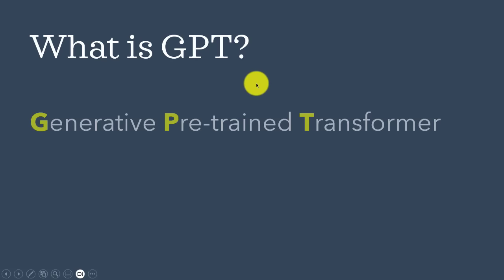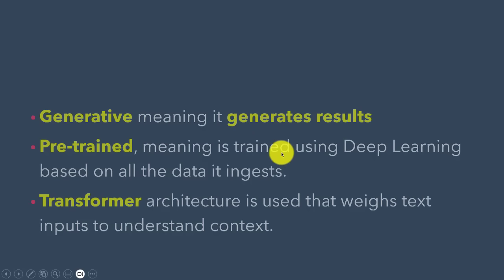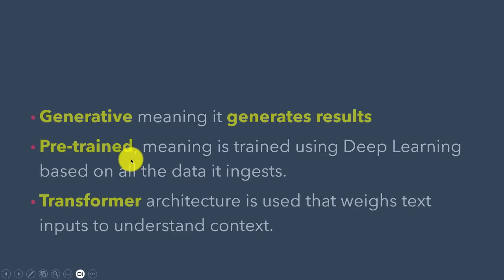So what is GPT — not the chat, you know the chatting part. G is Generative, P is Pre-trained, T is Transformer. Generative — as you saw, when I queried it, it generates results. It's pre-trained — trained using deep learning. What happens is that the whole internet is fed into it, up to the period of the 3.5 version — about 2021. It's trained to use the materials there to answer your questions.